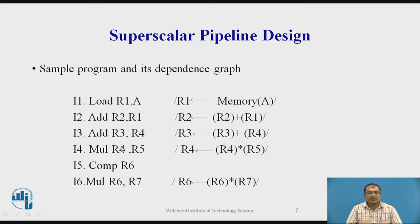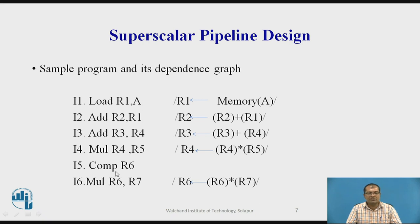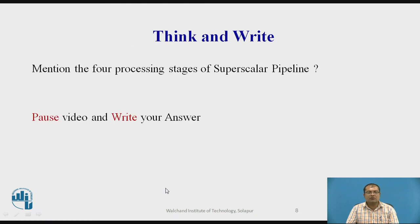I6 is depending on I4 and I5. After the compare instruction writes to R6, I6 multiplies R6 by R7. I6 cannot proceed until the output of R6 from I5 is available. There is both flow dependence and output dependence present. This type of dependency is called flow and output dependence. All three types — flow dependence, anti-dependence, and output dependence — are shown in the diagram.